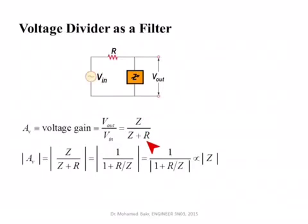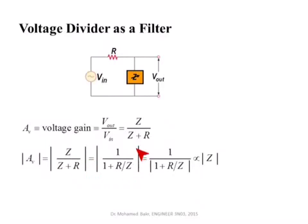The voltage gain from voltage division is Z over (Z plus R). This quantity has a magnitude and a phase — it's complex because some frequencies will get phase-shifted. If we are only interested in the magnitude, we take the modulus of both sides, which gives us the modulus of Z over (Z plus R). Dividing numerator and denominator by Z gives 1 over (1 plus R over Z).